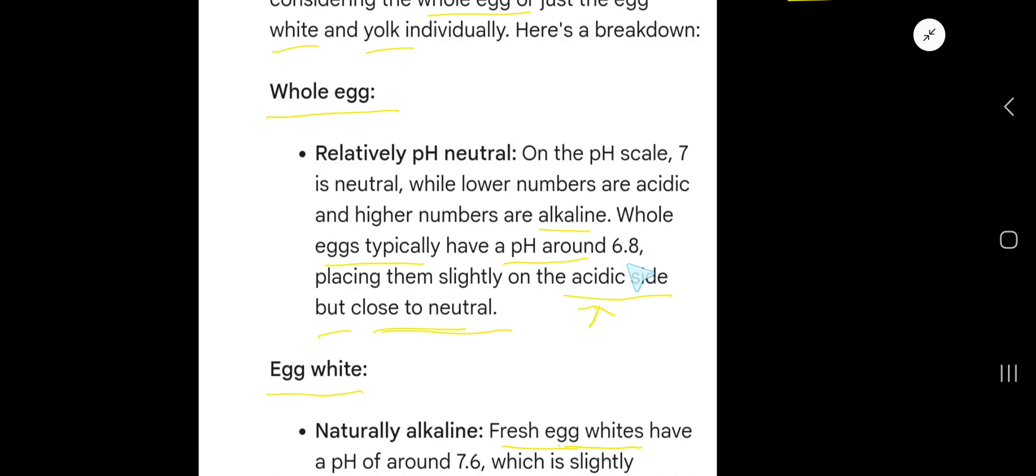pH around 6.8, which is less than 7, so this is acidic, placing eggs slightly on the acidic side but close to neutral. As neutral is 7, 6.8 is close to 7...